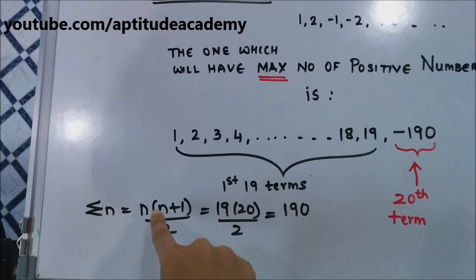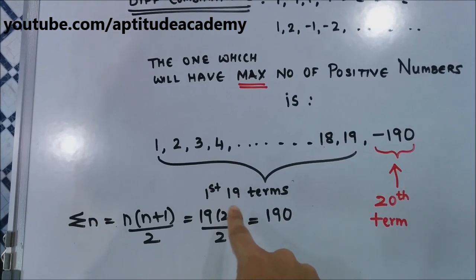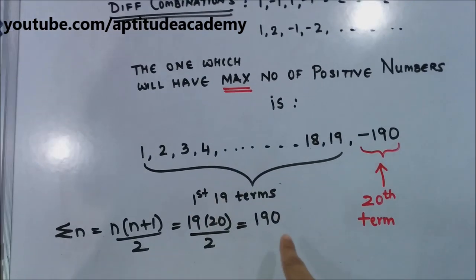So the sigma n will be n into n plus 1 by 2. So 19 into 19 plus 1, that is 20, by 2. 20 by 2 will be 10. So 19 into 10 is 190.